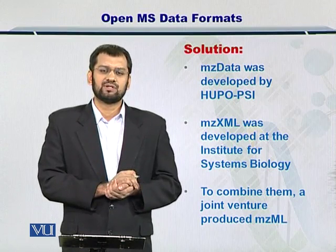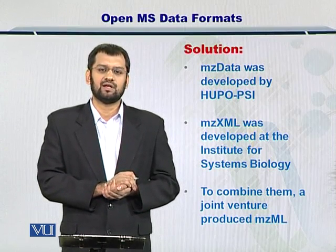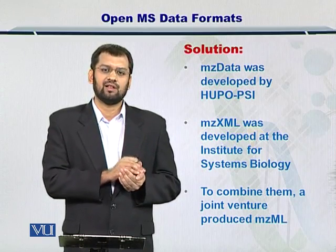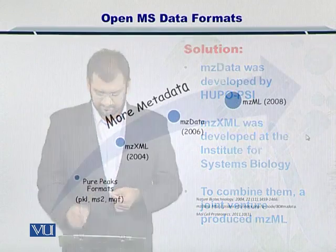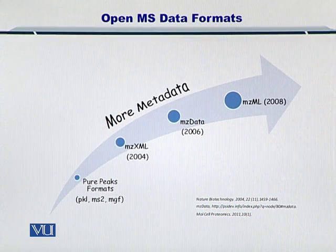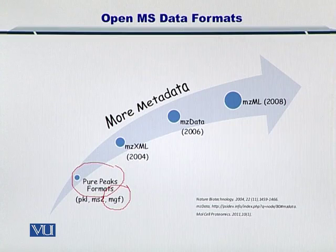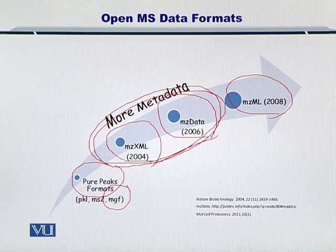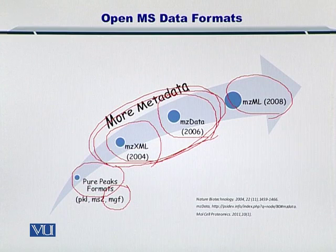Moreover, a joint venture between HUPO and the Institute of Systems Biology led to the formation of a new format called MZML, which brought together MZXML and MZData into a single open file format. The evolution of these formats is depicted by this chart, where at the beginning we just had the MGF file and the pure peaks format. Then in 2004, MZXML was introduced; in 2006, HUPO introduced MZData; and in 2008, MZML was introduced as a combination of MZXML and MZData. In this way, open file formats are becoming very informative and useful for processing proteomics data.